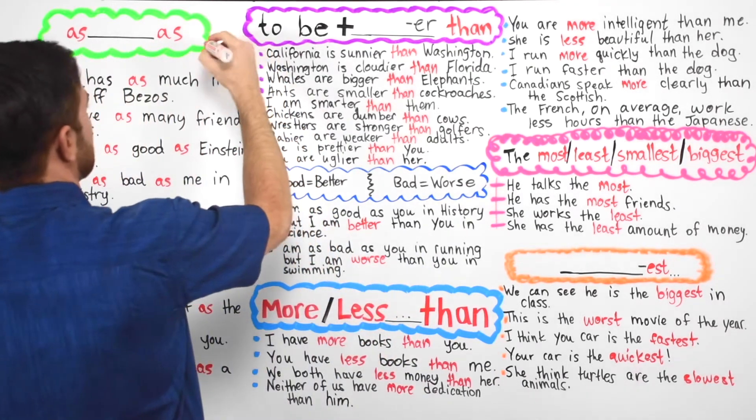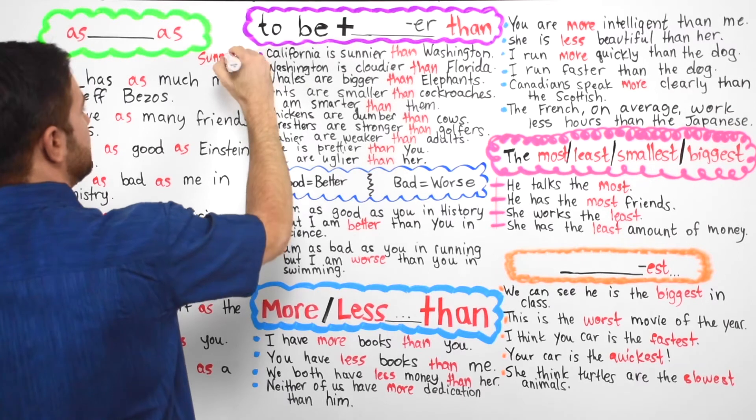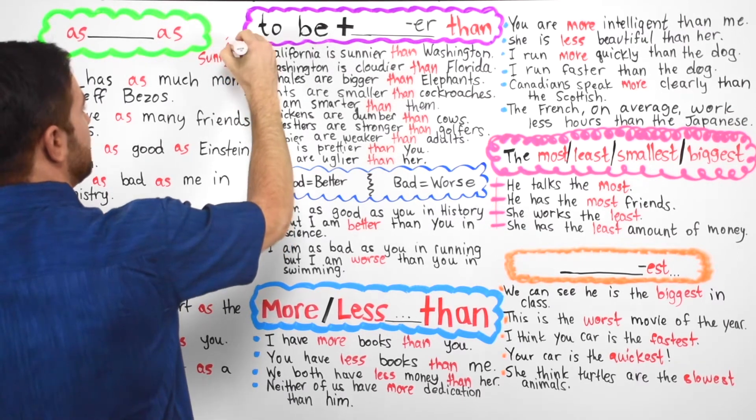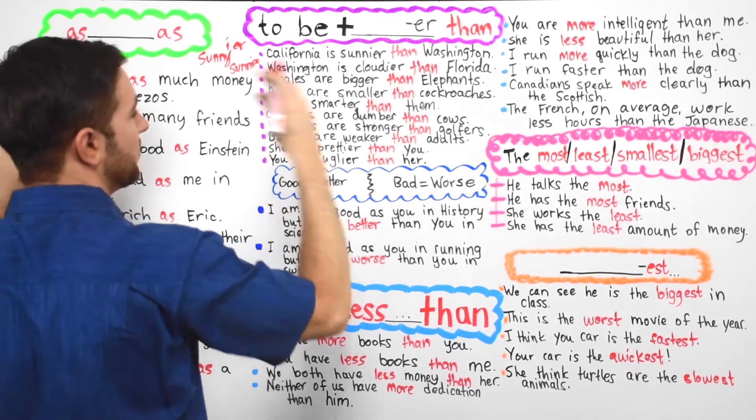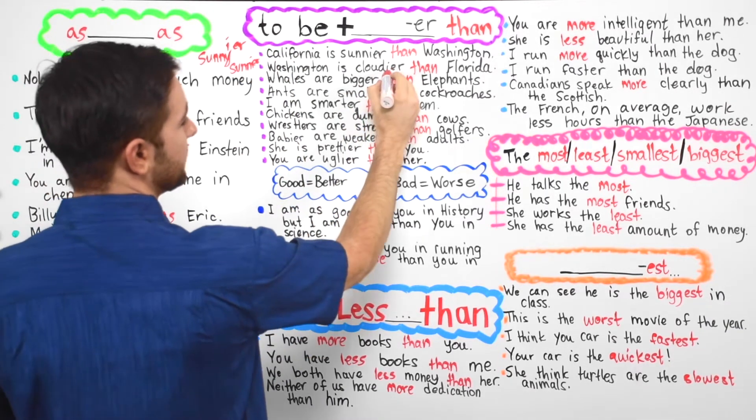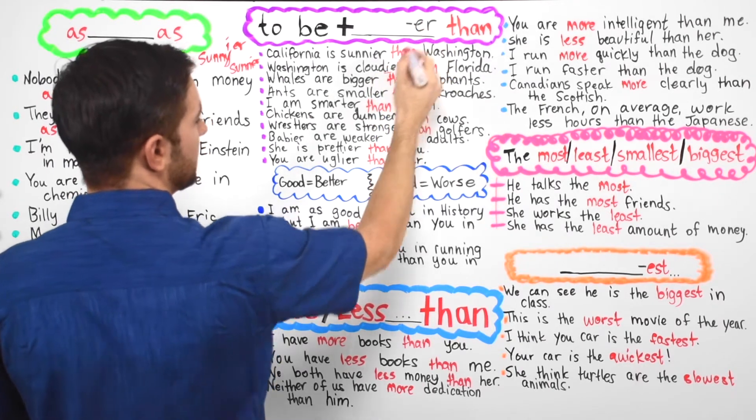It looks like sunny. Take away the y, add an i e r. So it becomes sunnier. You could do it with all the words like cloudy for example. See that i? It was a y. Now we put an i and then we have er, cloudier.